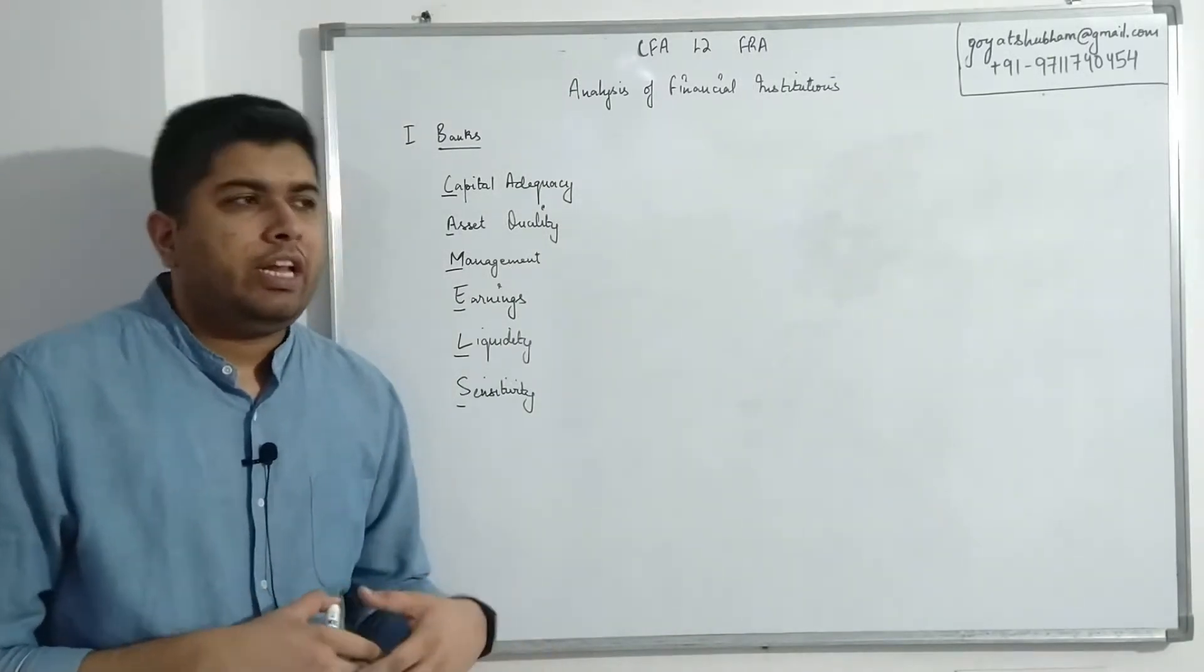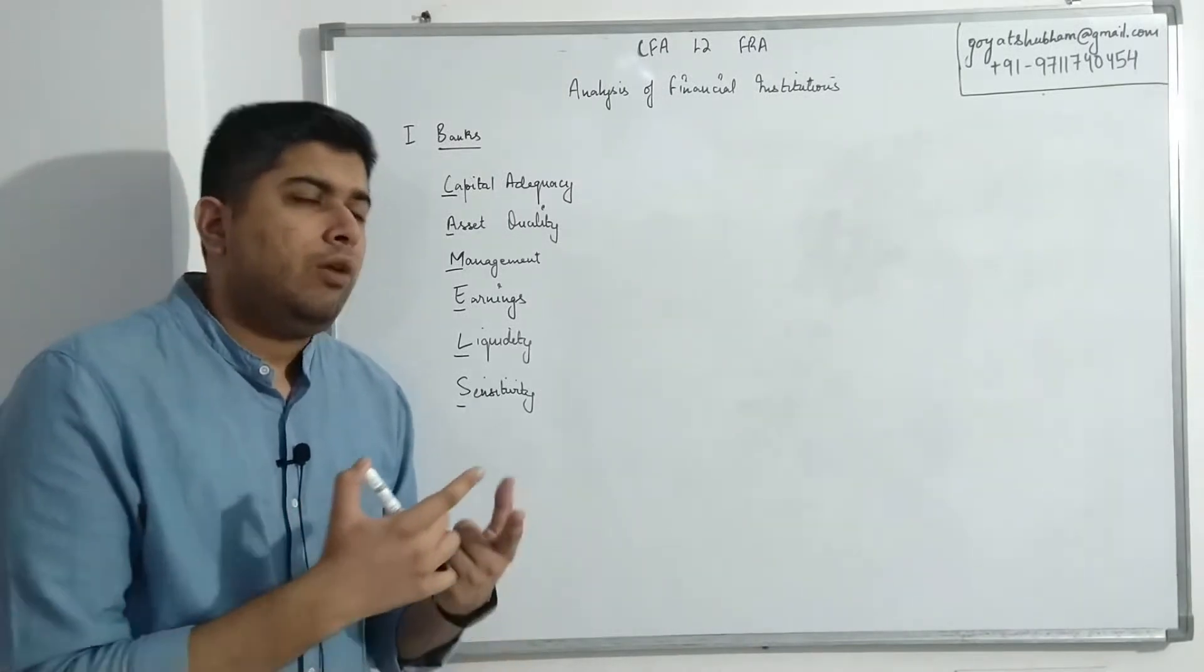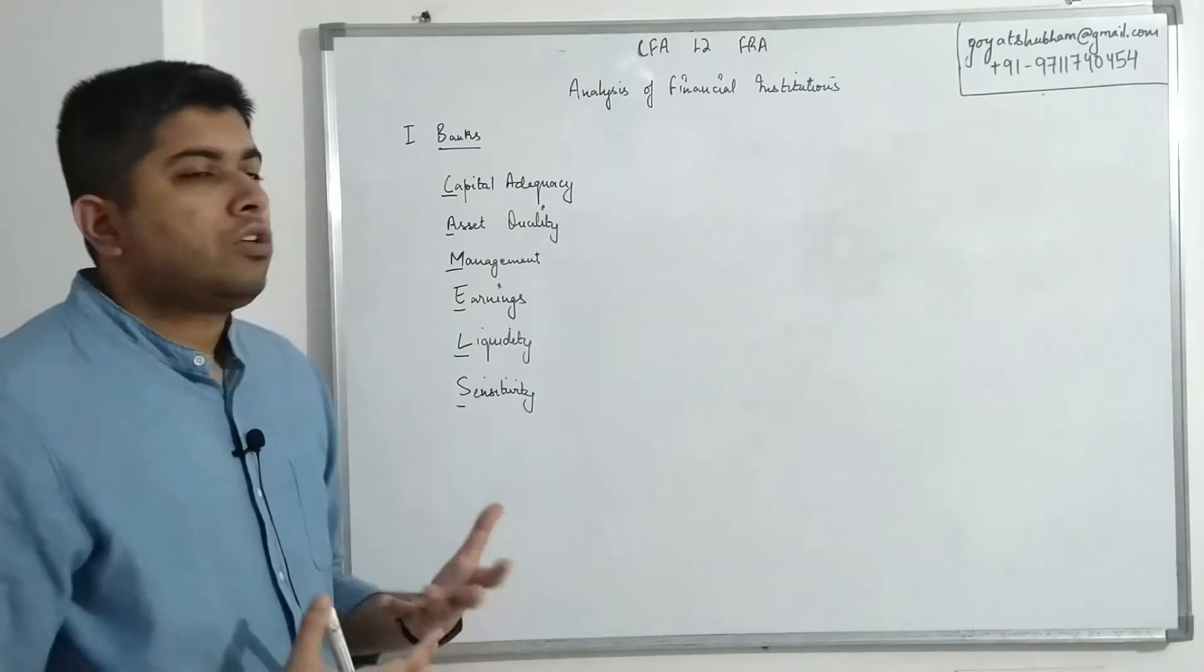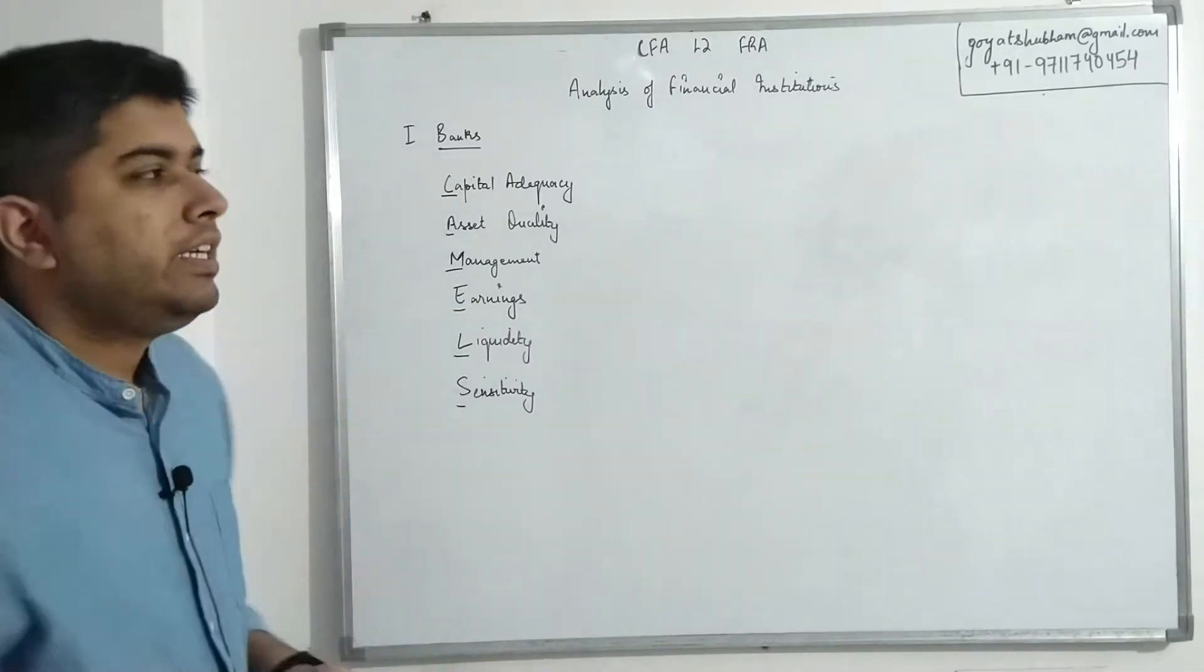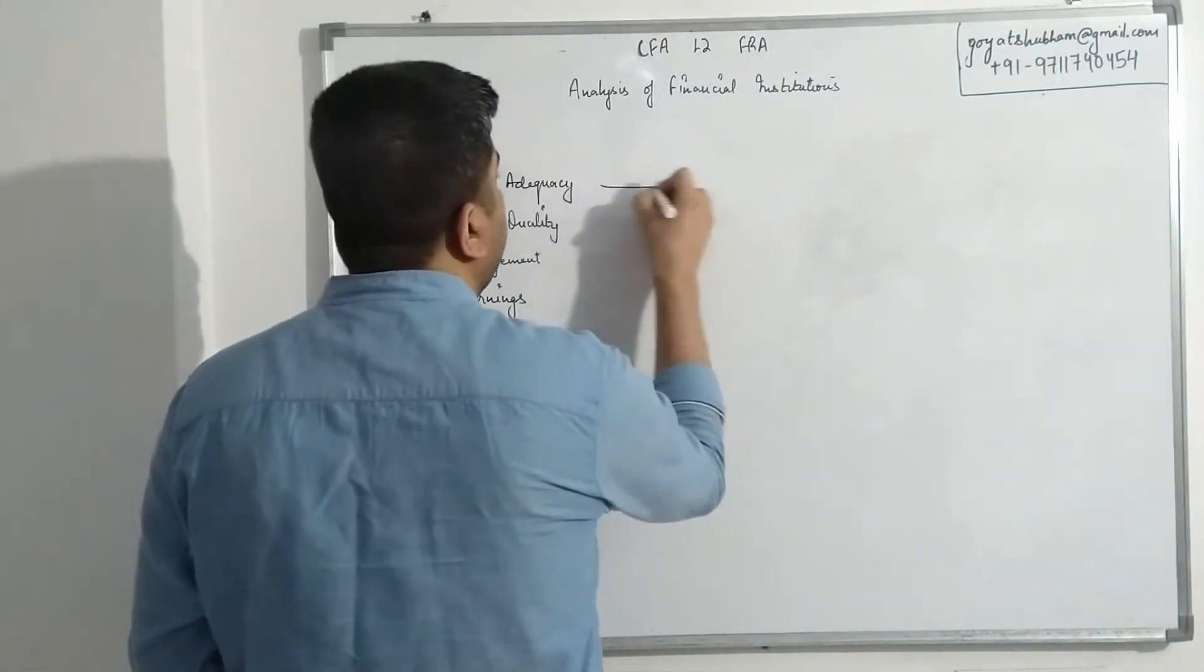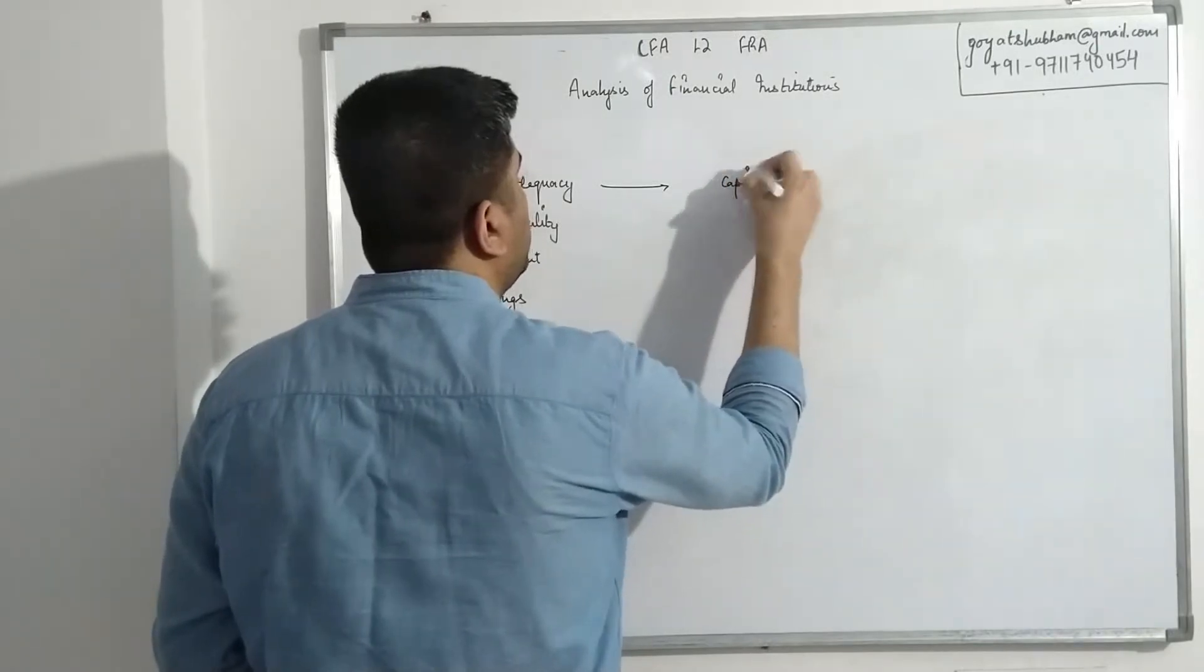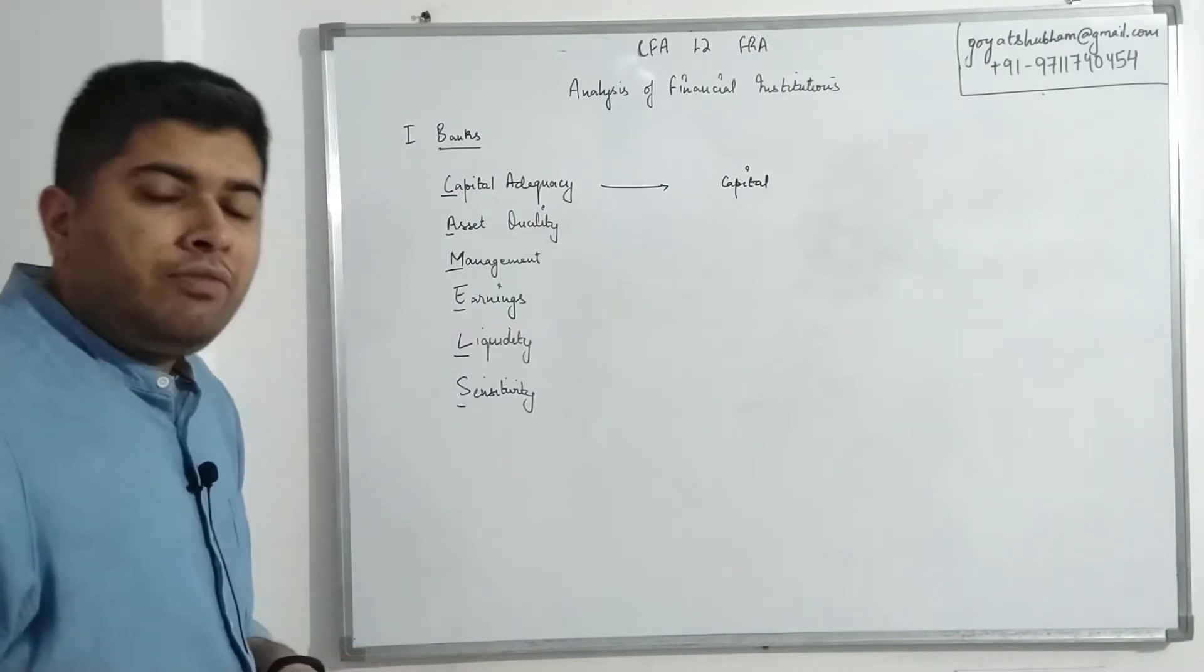Banks need to have an adequate amount of capital. Capital of banks doesn't work exactly the same way as capital for any normal company would. We've discussed capital at Level 1 corporate finance and at Level 2 also, that it comprises a combination of preference, equity, debt. In case of banks, that is not going to be so.